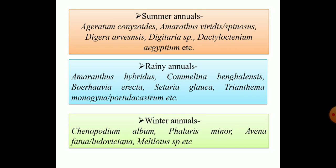Annuals or seasonals are categorized into three categories: summer annuals, rainy annuals, and winter annuals. In summer annuals we have Ageratum conizoides, Amaranthus viridis or Amaranthus spinosus, Digera arvensis, Digitaria species, and Dactyloctenium aegyptium. In rainy annuals we have Amaranthus hybridus, Commelina bengalensis, Boerhaavia erecta, Setaria glauca, Trianthema monogyna, and Trianthema portulacastrum. In winter annuals we have Chenopodium album, Phalaris minor, Avena fatua, Avena ludoviciana, and Melilotus species.